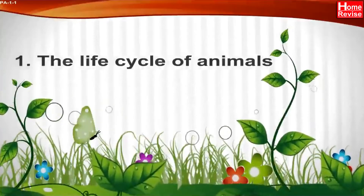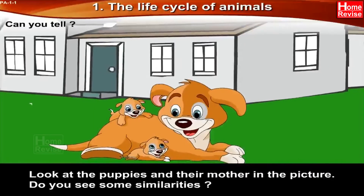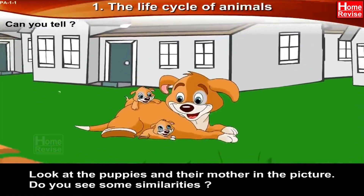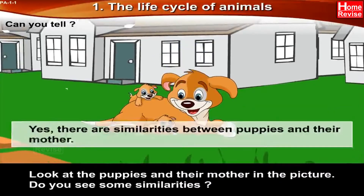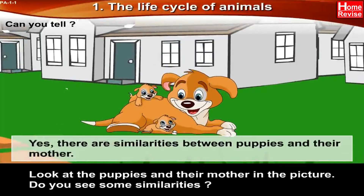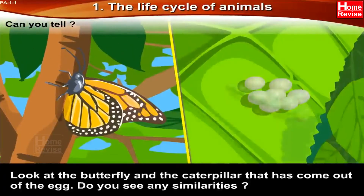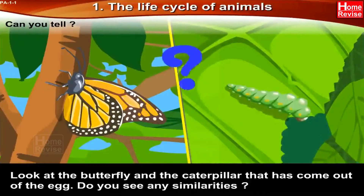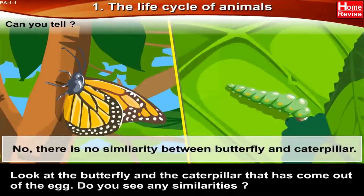Chapter 1: The Life Cycle of Animals. Can you tell? Look at the puppies and their mother in the picture. Do you see some similarities? Yes, there are similarities between the puppies and their mother. Look at the butterfly and the caterpillar that has come out of the egg. Do you see any similarities? No, there is no similarity between the butterfly and the caterpillar.